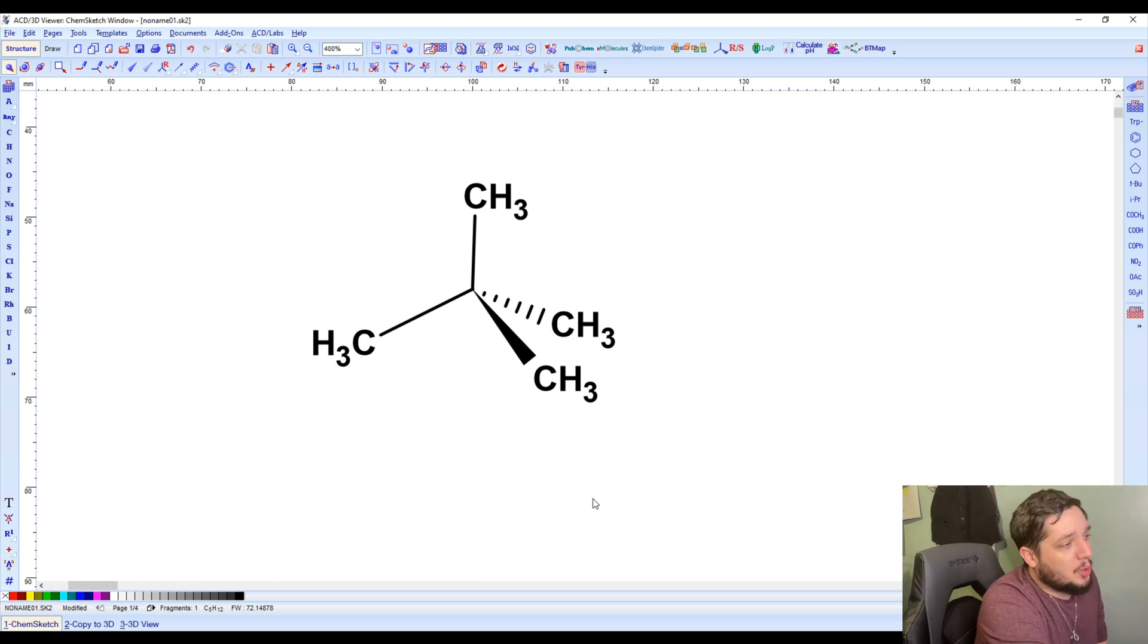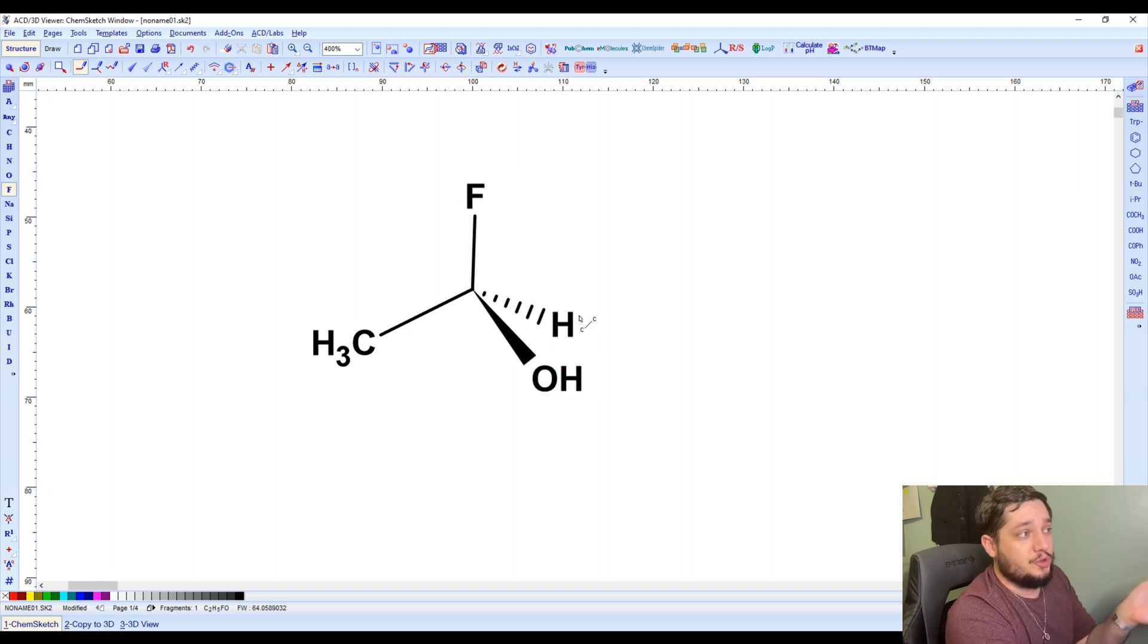So this is our little 3D configuration. Obviously, this is achiral at this point, because they're all the same atoms in every direction. So this is, of course, the most obvious and most simple way that you can create a chiral molecule. And this is probably what most people will be doing most of the time. But this is, of course, ChemSketch, and we really believe in giving you a lot more tools than what you need for those simple applications, but go into the more advanced ones.